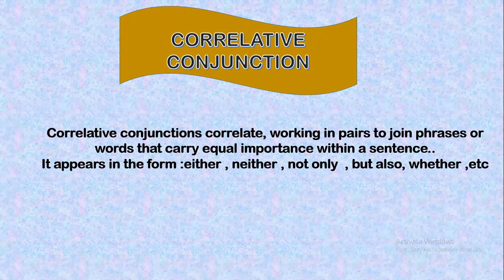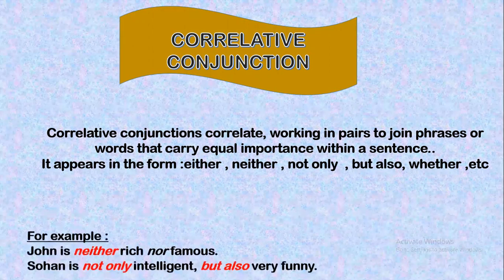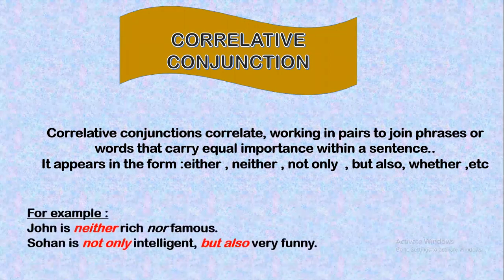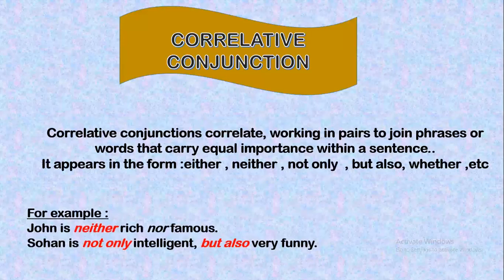Let us see with the help of examples. John is neither rich nor famous. Sirhan is not only intelligent but also very funny. You can see the words 'neither/nor' and 'not only/but also' are playing the role of correlative conjunction. They are showing equal importance of both the qualities in the sentence.